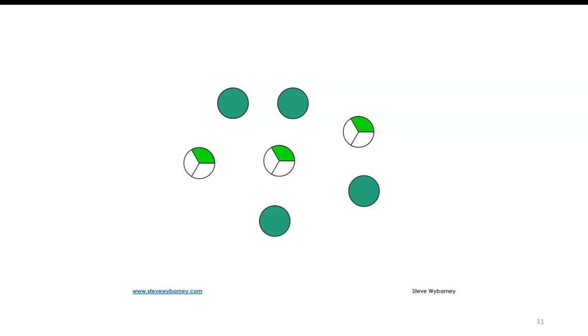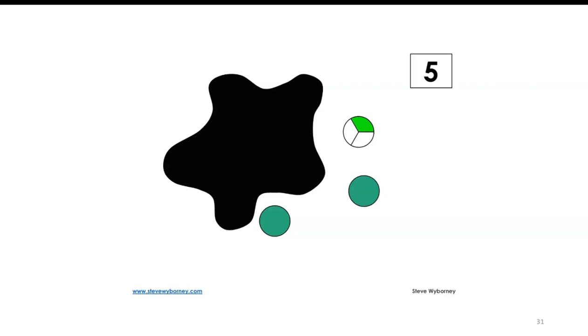All right, so what number is here? I have four whole circles and then three thirds. So four and three thirds is five. Splat. Now, what number is underneath the splat? As a subtraction problem, this is essentially five minus two and one third.